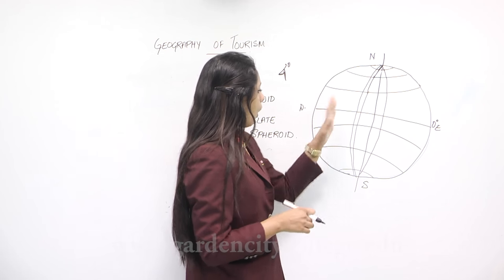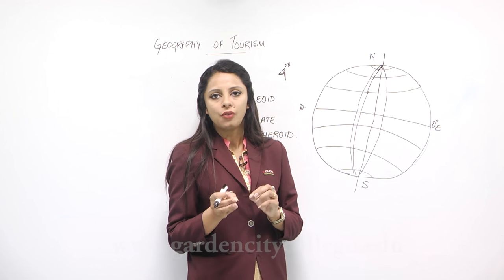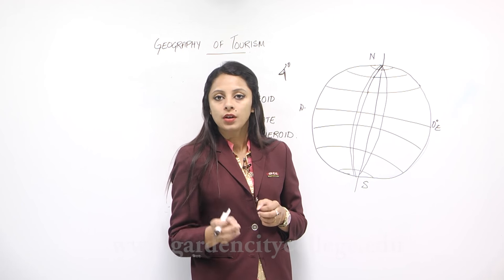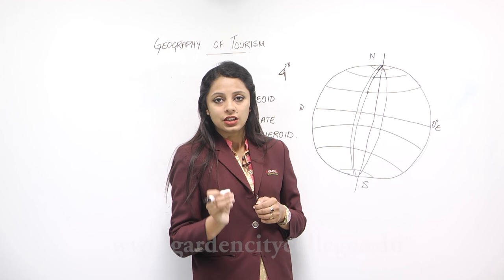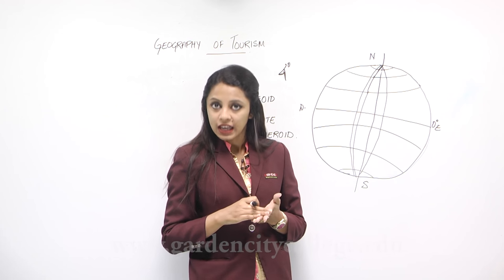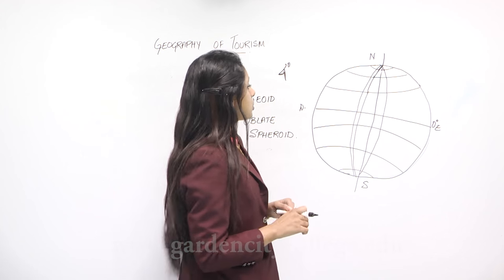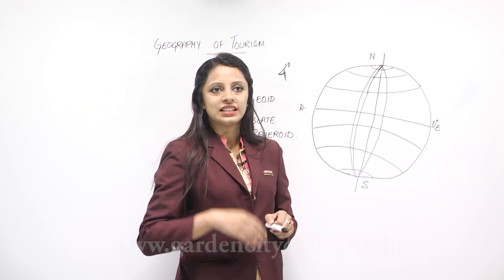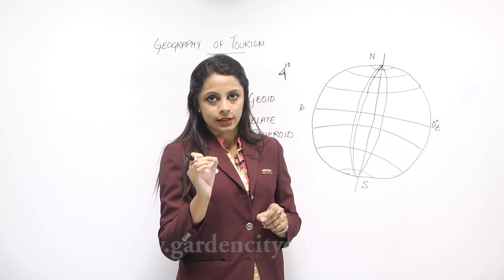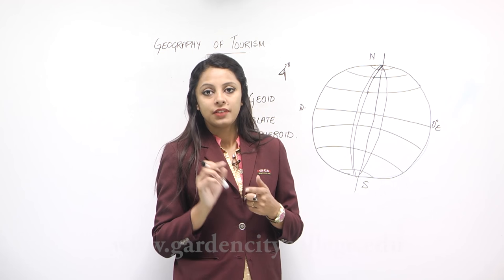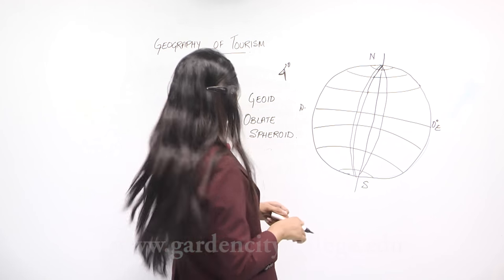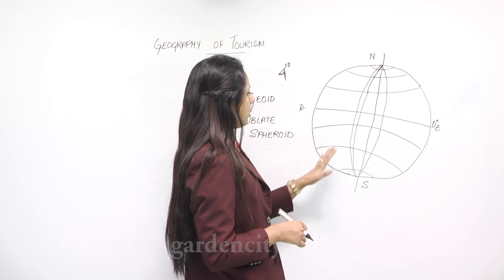Based on the position of a place and its latitude and longitude, we can calculate the local time of that place. The prime meridian is always taken into consideration for time calculation. For example, India is on the eastern side at 82 and a half degrees east longitude, which means India is approximately five and a half hours ahead of London.